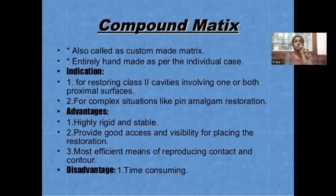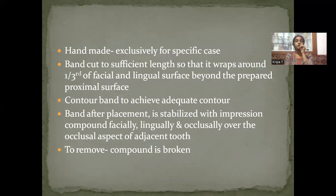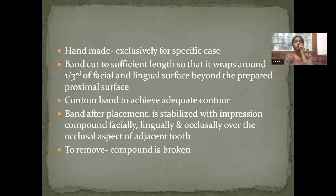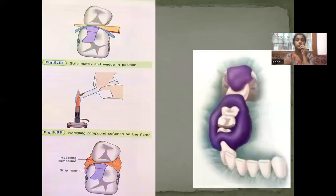The compound matrix is a custom-made one made for each individual case. Indication is to restore certain complex situations and MOD. Advantages: highly rigid and stable, provides adequate access and visibility. Disadvantage: time consuming, purely handmade for a specific case. The band is cut to sufficient length so it wraps around one third of the facial and lingual surfaces beyond the prepared proximal aspect. Contour the band, stabilize it with impression compound, and reinforce facially, lingually, and occlusally. After restoration, remove by removing the impression compound.